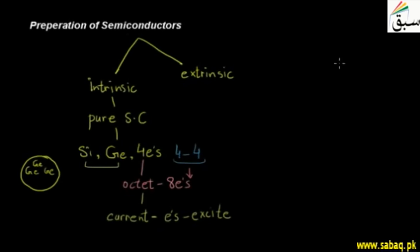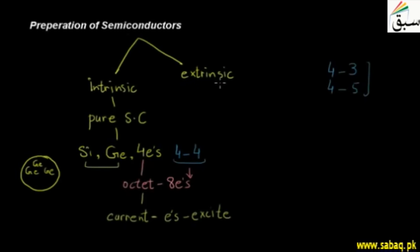Now in the case of silicon or germanium atoms, if we get another element that has three or four or five electrons and make a combination, then it will happen that one electron will be free. When we have more free electrons, the current will flow easily. So we say that we have an extrinsic semiconductor, which means that something from outside has been added to it. When we add some impurities to this semiconductor, we add some impurities.